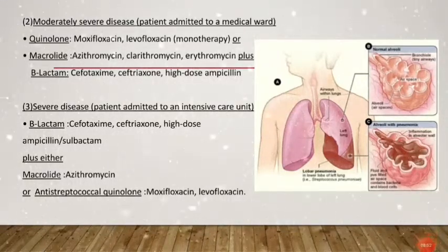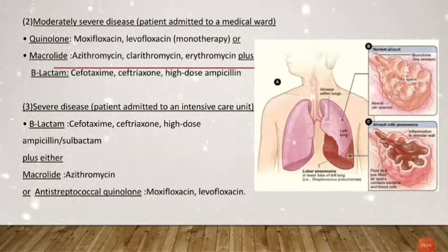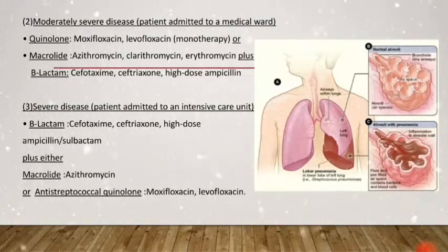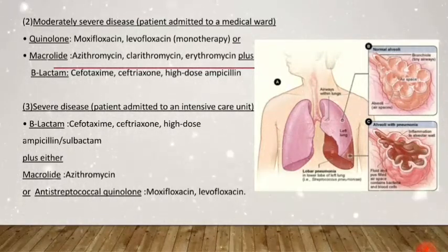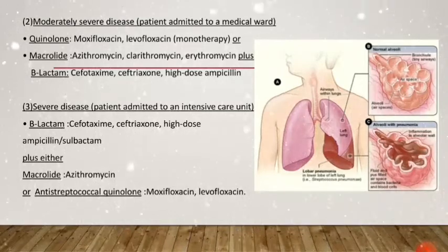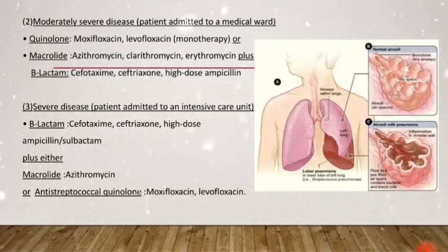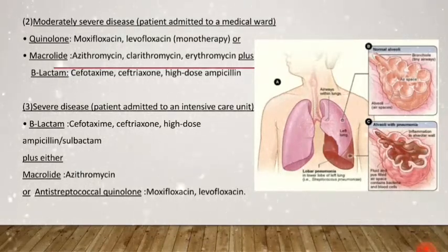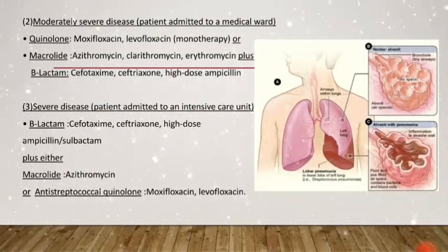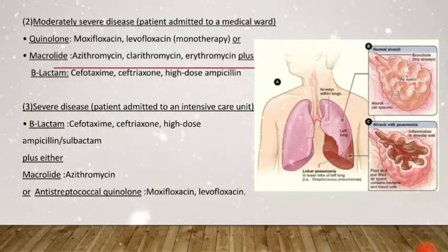In case of severe disease — that is, if the patient is admitted to the ICU — a combination therapy is used consisting of a beta-lactam (cefotaxime, ceftriaxone, high-dose ampicillin, or ampicillin-sulbactam) plus either a macrolide or anti-streptococcal quinolones. Azithromycin is the macrolide of choice, and for anti-streptococcal quinolones, either moxifloxacin or levofloxacin can be used.